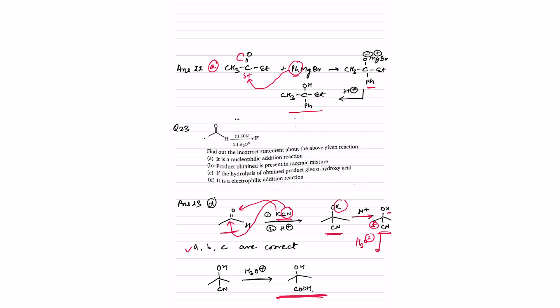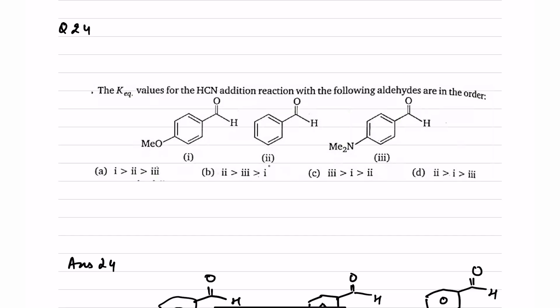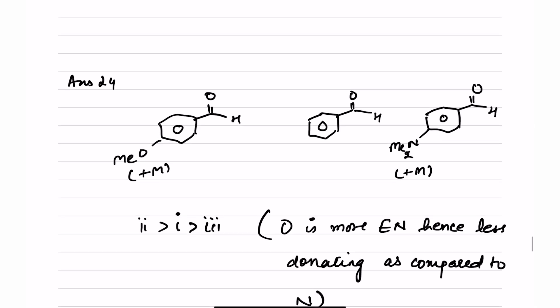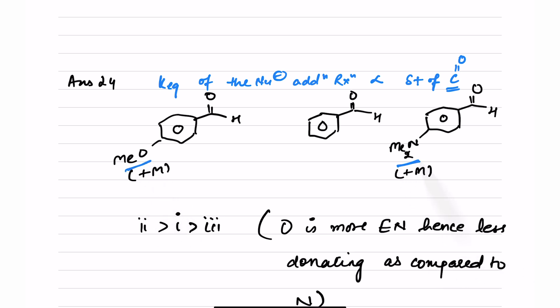Question number 24: Keq values of HCN addition reaction with the following aldehydes are in which order? Keq of a nucleophilic addition reaction is directly proportional to the delta positive charge on the C=O carbon — so faster the nucleophilic attack, the better the Keq value. Compound two has no electron-donating group, while compounds one and three have +M groups on benzaldehyde.